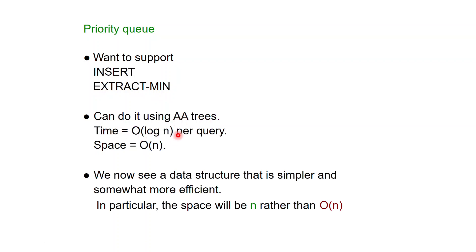Using AA trees costs O(log n) time per query and linear space, because you can find the minimum element in binary search trees in logarithmic time. However, we are now going to see a structure that is simpler and somewhat more efficient. The time is still O(log n), but the space will be just n — we are going to get rid of all the pointers of the trees. The structure we're going to see is extremely simple and very easy to program and understand.